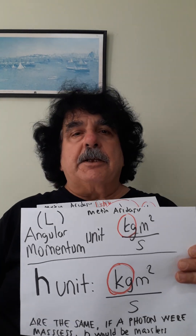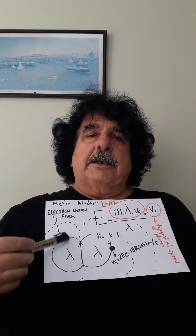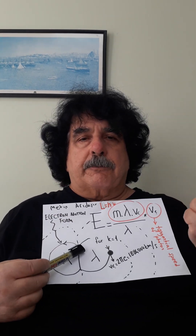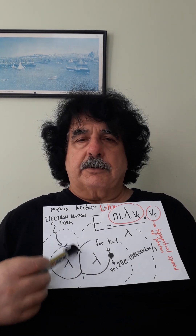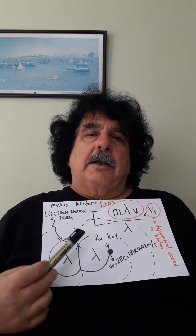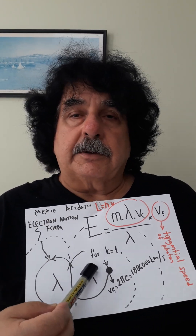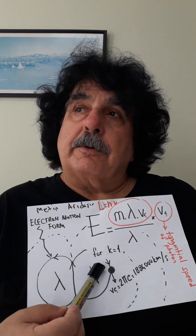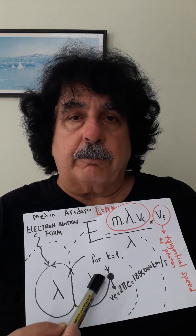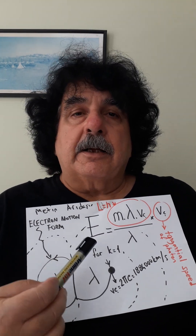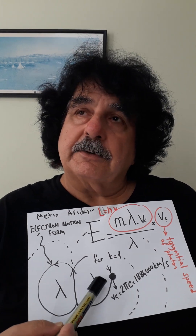A photon is an imaginary, inseparable point of electron motion that forms a surface. This is the section of three-dimensional electron motion form. Electron motion forms a tangent at any point. Each point of the motion surface is a photon, and each photon point has a tangential speed 6.28 times greater than the speed of light.